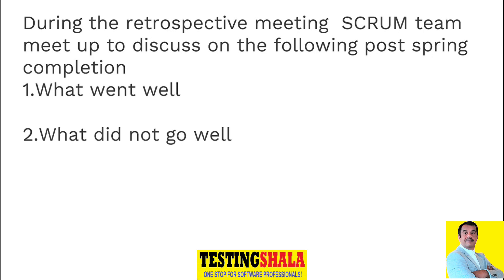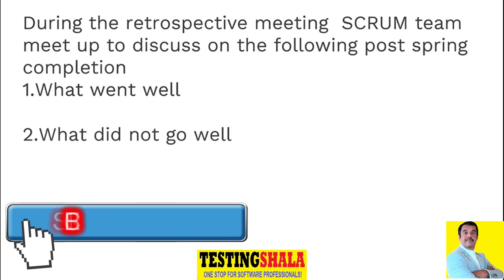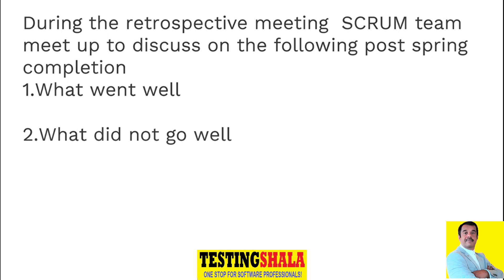The second aspect is discussing what did not go well. The reasons why it did not go well are also required to be documented, because we need to learn why it did not go well and understand the issues within the team. How can we correct these issues in future Sprints will also be documented as part of this retrospective meeting.